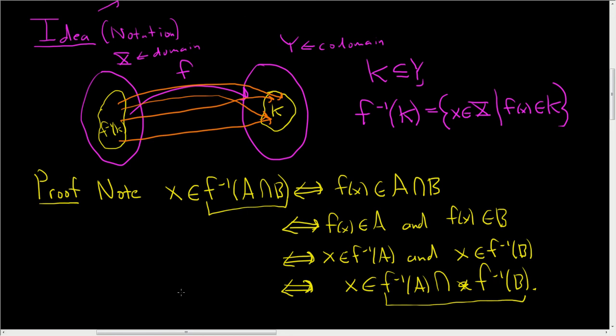So therefore, we are done. The two sets are equal. So therefore, the inverse image of A intersect B is equal to the inverse image of A intersected with the inverse image of B.